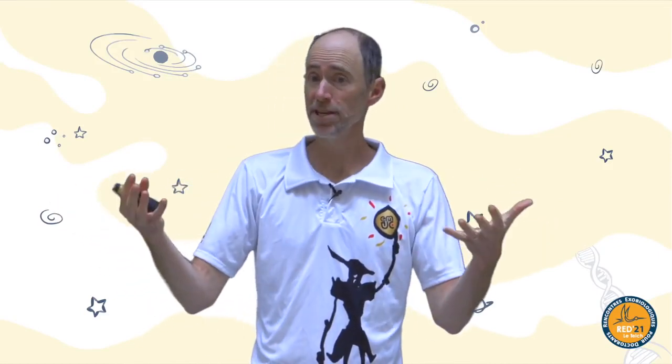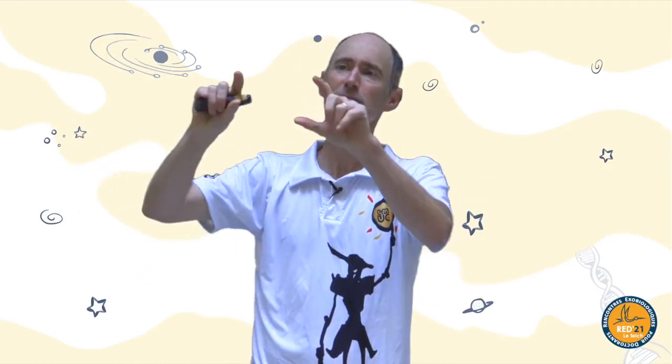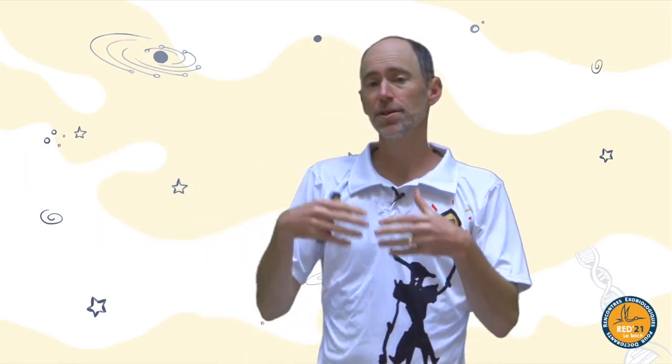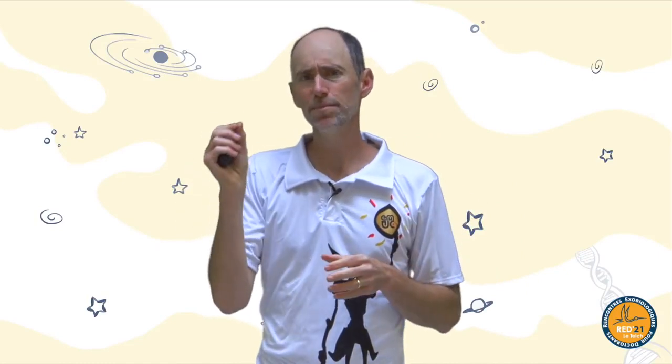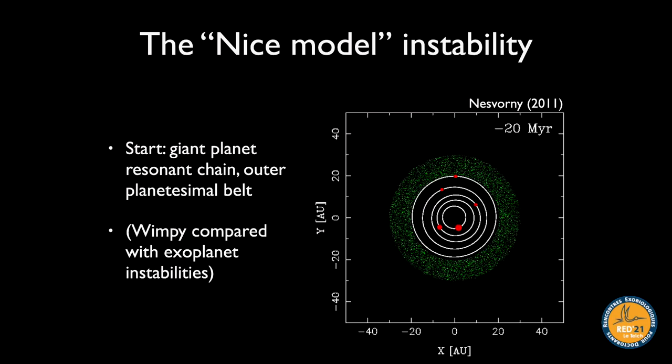This is sometimes called the Nice model, developed in the French town of Nice. The idea is to match the giant planets' current orbits by imagining that early on, during the gas disk phase, they migrated and possibly got trapped in resonances, leaving their orbits closer together. Beyond the planets there was probably leftover icy material analogous to an early asteroid belt. What happens when you assume compact early orbits and an outer belt of stuff?